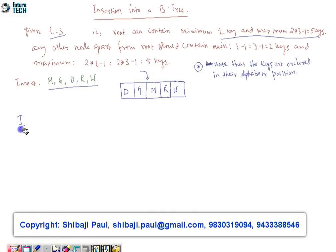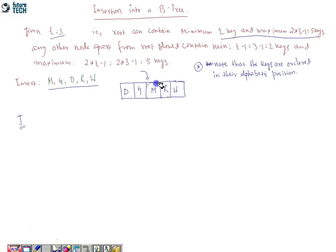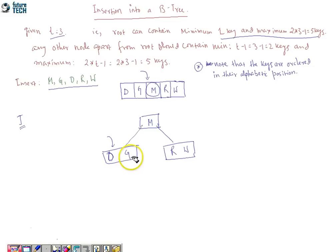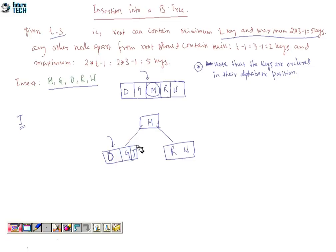To insert J — the next key — we need to split the node. We take the median of the keys in this full node, which is M, and split using M as the pivot. After splitting, G and T remain on the left side and R and W go to the right subtree. Now we can insert J: since J is less than M alphabetically, we go to the left subtree, and since J is greater than G, J is inserted between G and T.